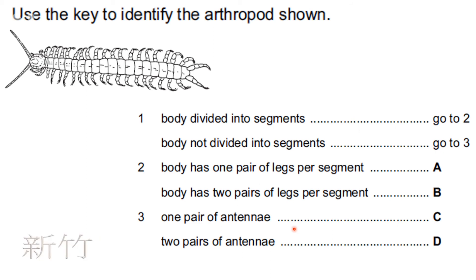This is the easiest one. Use the key to identify the arthropod shown. First trait: body divided into segments or not divided into segments? The body is divided into segments, so go to question two. Next: body has one pair of legs per segment or two pairs of legs per segment? One pair means two legs, so each segment has two legs — one on each side. The answer is going to be A.